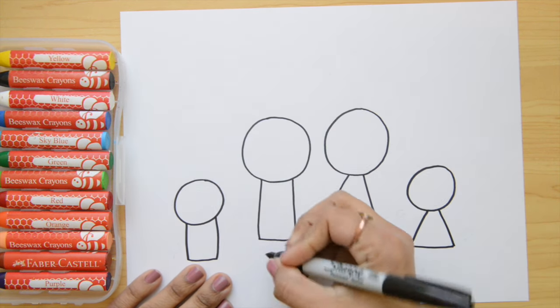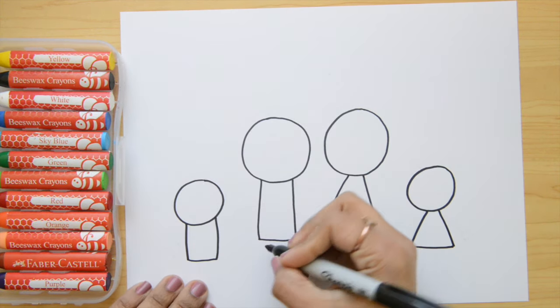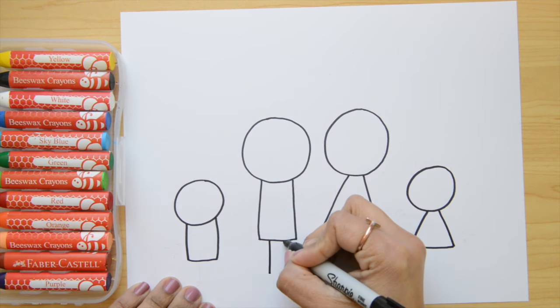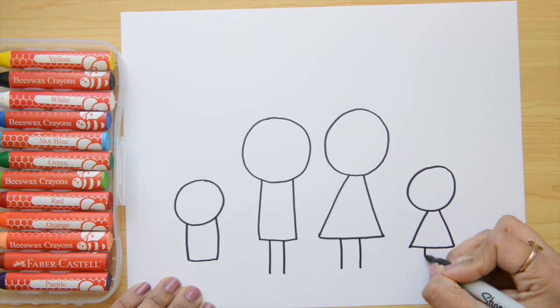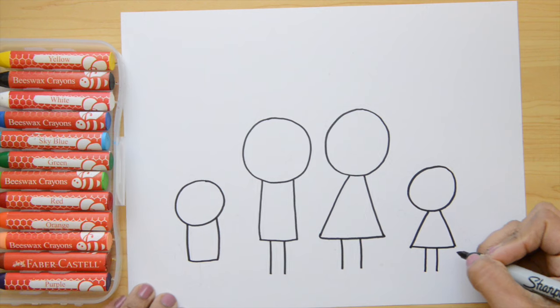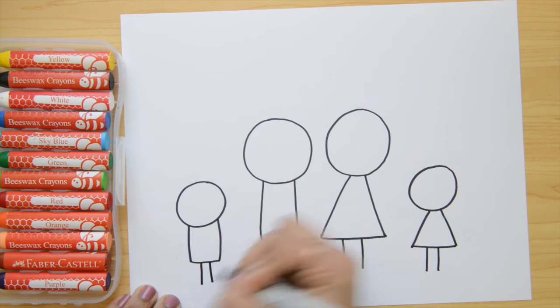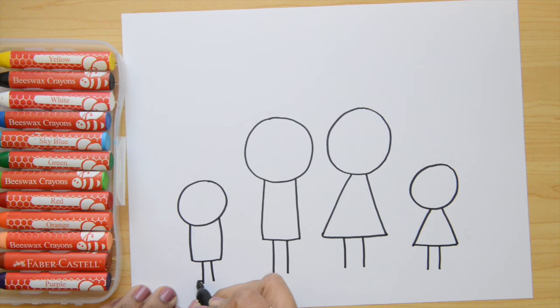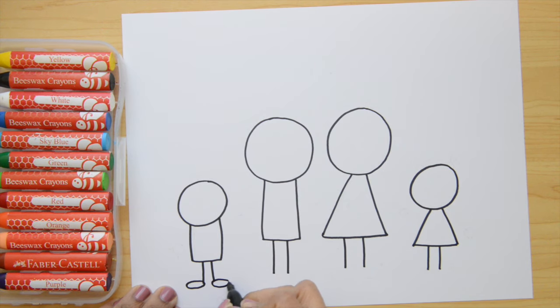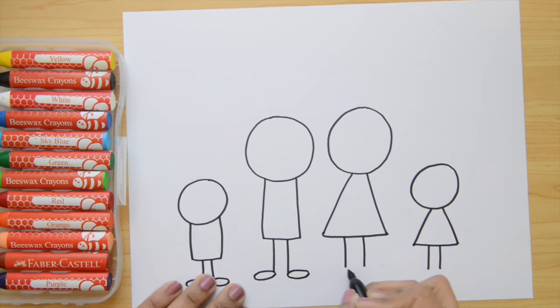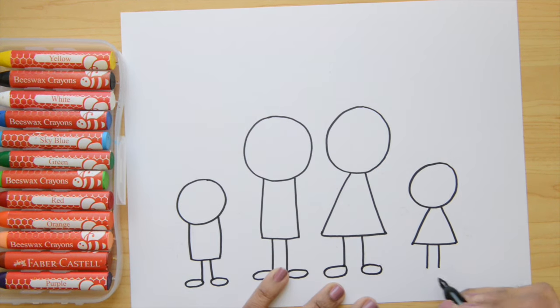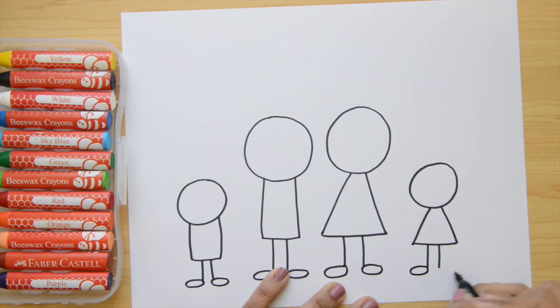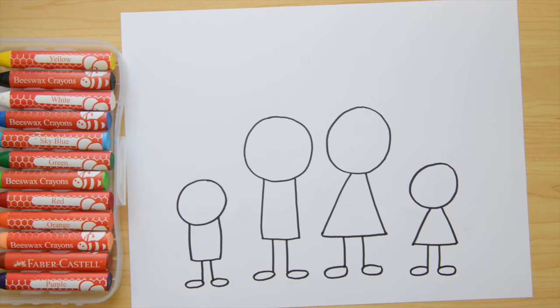Then we're gonna do the feet. So we're gonna continue doing lines here underneath each shape we did. So I'm gonna do two lines underneath the rectangle shape. Two lines here underneath the triangle for the girl. And now two for the boy. Leave a space in between the lines. And the next thing is gonna be oval shapes. We're gonna do ovals underneath their lines. So that's gonna be their feet. One of the ovals is pointing left and the other one is pointing to the right.